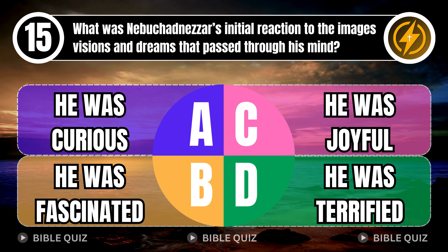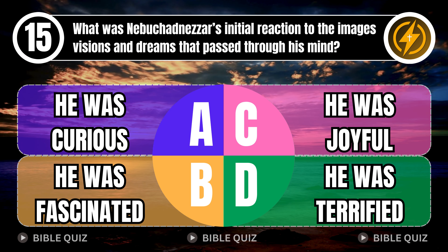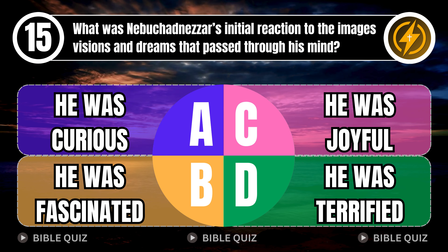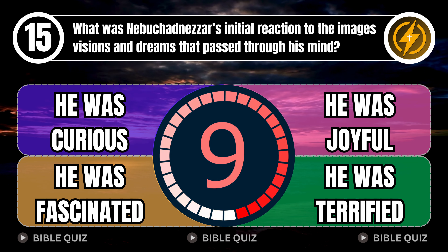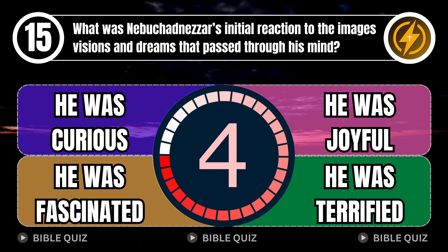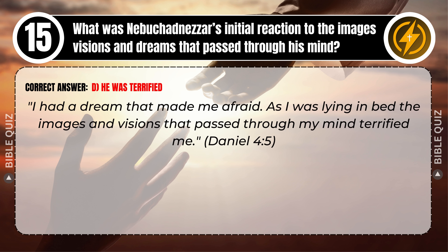Question 15: What was Nebuchadnezzar's initial reaction to the images, visions and dreams that passed through his mind? A. He was curious. B. He was fascinated. C. He was joyful. D. He was terrified. Correct answer: D. He was terrified. Explaining the Bible — 'I had a dream that made me afraid. As I was lying in bed, the images and visions that passed through my mind terrified me.' Daniel 4 verse 5.